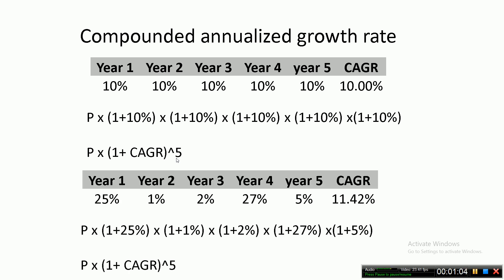Now suppose there is another investment that gives you varying returns: 25% in the first year, 1% in the second year, 2% in the third year, 27% in the fourth year, and 5% in the fifth year. To find the year-on-year growth rate, you take the amount invested P, multiply it by each year's growth factor, and equate it with P into 1 plus CAGR to the power 5. This gives a CAGR of 11.42%, which is a geometric or multiplicative average of these returns.